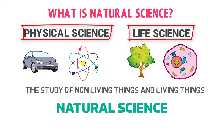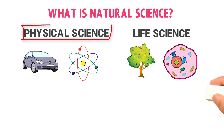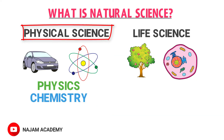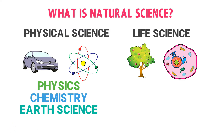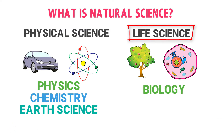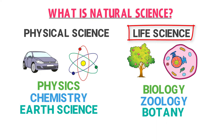The two main parts of natural science — physical science and life science — are further divided into branches. Physical science is divided into physics, chemistry, earth science, etc., while life science is divided into biology, zoology, botany, etc.